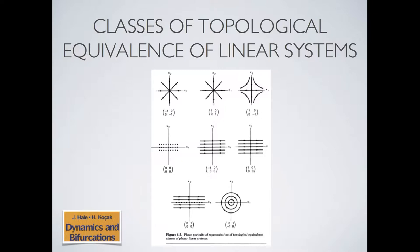If you have two negative eigenvalues you have a contracting flow, two positive an expanding flow, a mixture gives the saddle node, or a rotating flow if the eigenvalues are in the secondary diagonal rather than the main diagonal. If one of the eigenvalues is zero and the other is positive, you have an expanding flow in one direction and no change in the other.